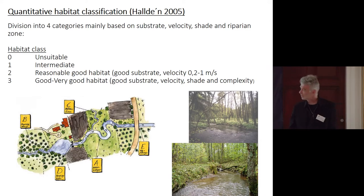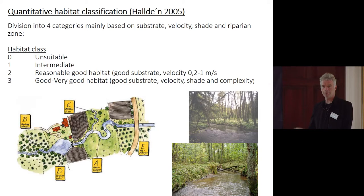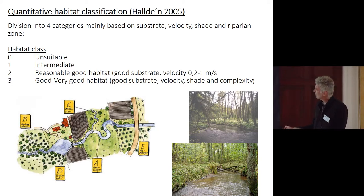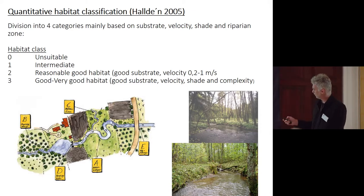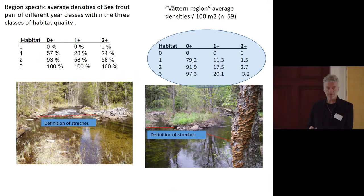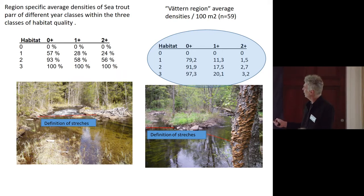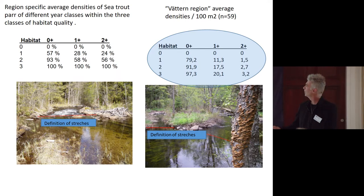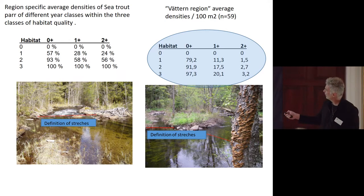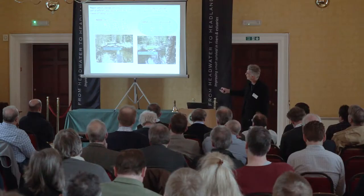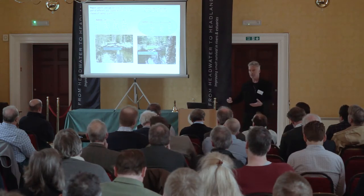The approach involves dividing streams into habitat categories rated from class 0 (unsuitable) to class 3 (very good — good substrate, velocity, shade, and complexity). We then use region-specific average densities within each category. For example, in the Vättern region in central Sweden, a class 3 habitat should hold 97.3 zero-plus fish per 100 meters. Class 1 habitat would hold 57% of that number. We can extrapolate for different habitats across the whole stream without needing electrofishing data for every single stretch.